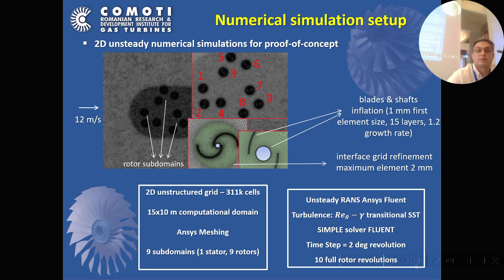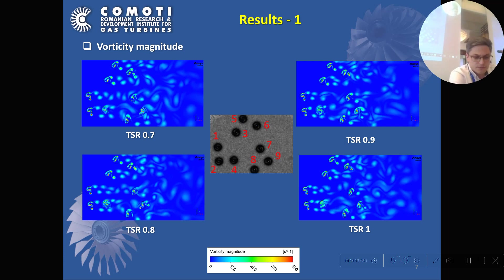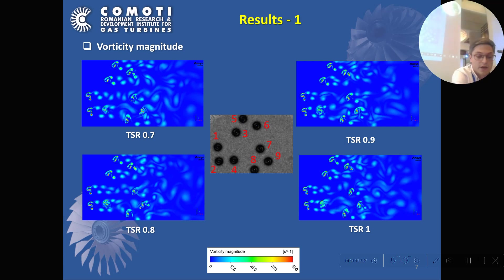Moving to the results: this plot shows the vorticity magnitude for different tip speed ratios — from TSR 0.7 up to TSR 1 — for different operating regimes of the turbines. We can easily understand that rotors 1, 2, 3, and 5 have no upstream influence with the current wind direction, while the vorticity created by these rotors is advected to the ones in the wake — for example rotors 4, 7, 6, 8, and 9. Some of them have downside effects due to this vorticity advection, while others have a positive coupling effect with enhanced performance.